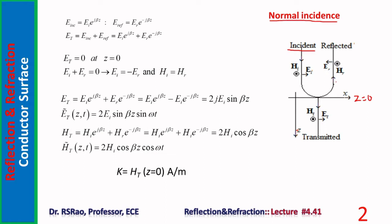According to Snell's law, angle of reflection equals angle of incidence. Here the angle of incidence is zero, so the reflected wave travels normally to the reflecting surface. We now have two waves above the conductor surface: one incident wave traveling in the negative z direction and one reflected wave traveling in the positive z direction. They travel over the same path, so superposition takes place, resulting in a standing wave pattern.